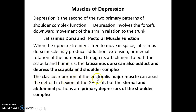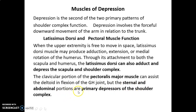Regarding the pectoralis major muscle, it has a sternal portion and a clavicular portion. The clavicular portion of the pectoralis major can assist the deltoid in flexion of the glenohumeral joint, but the sternal and abdominal portions are different in their role.